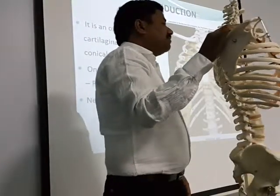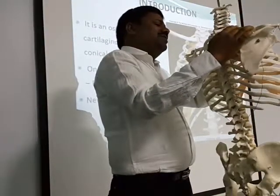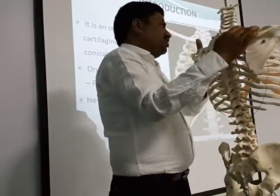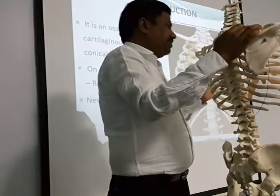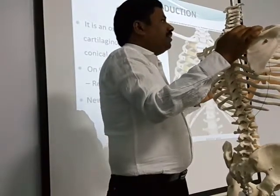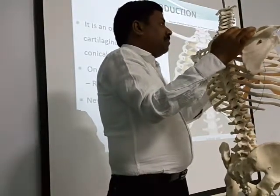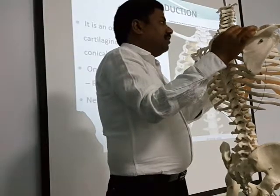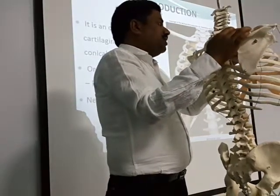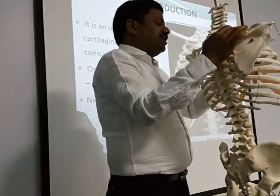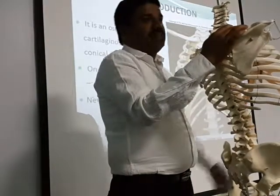Regarding the clavicle, it forms only part of the thoracic inlet and articulates with the manubrium. The sternum has different parts: the manubrium sternum, the body of the sternum, and the xiphoid process.